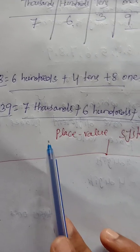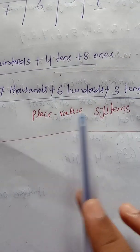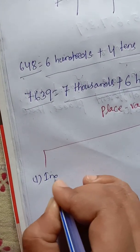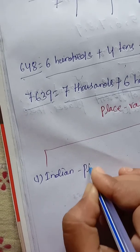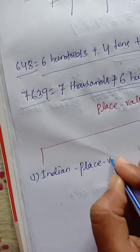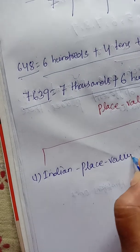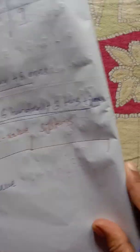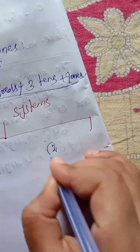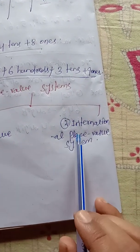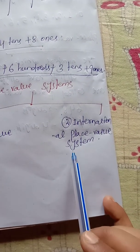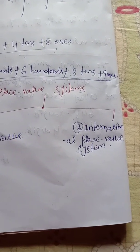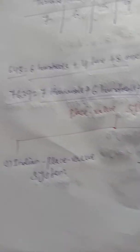We divide this place value into two systems. One is the Indian place value system and the second one is the international place value system. The place value is different in the international system. First, we will see the Indian place value chart.